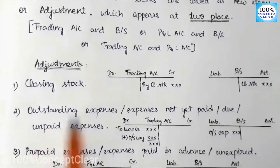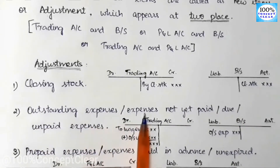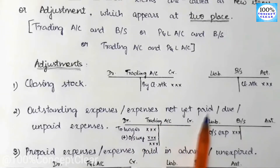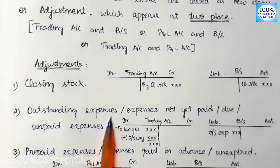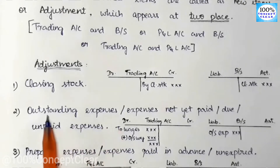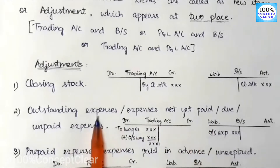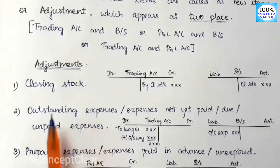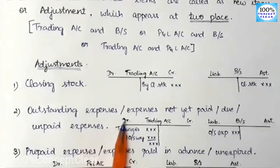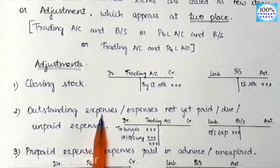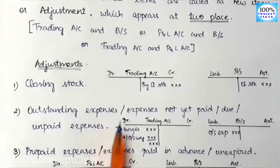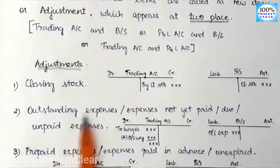The next adjustment is outstanding expenses — expenses not yet paid but due. Outstanding expenses are expenses that we have incurred in the business but have not yet paid. That is the outstanding expenses — expenses not yet paid. For example, outstanding wages are added to wages in the trading account. We add the original amount plus the outstanding expenses.